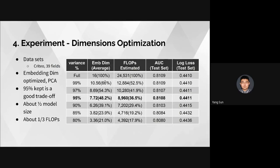The second experiment observes dimension reduction on the Criteo dataset using the two-path method. We first train a full-size model with embedding dimension 16, then use PCA to optimize field-specific embedding dimensions, keeping 99%, 97%, 95%, 85%, and 18% variance, observing how model speed and performance change. We find that 95% variance is the best trade-off: AUC drops almost nothing, log loss has no significant degradation, and the average embedding dimension is only about half the original — meaning model size is halved, FLOPs are one-third, and inference speed is three times faster.